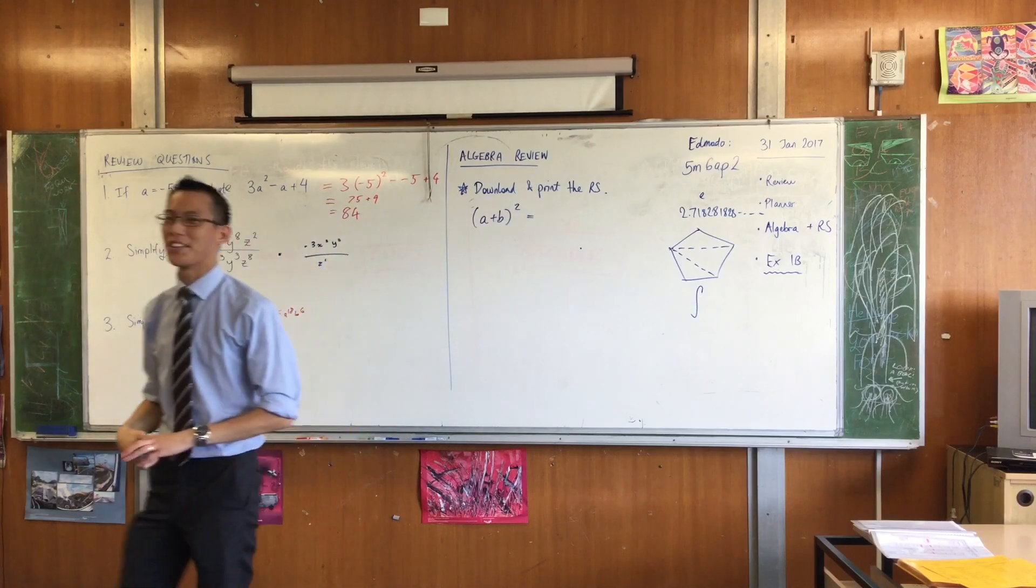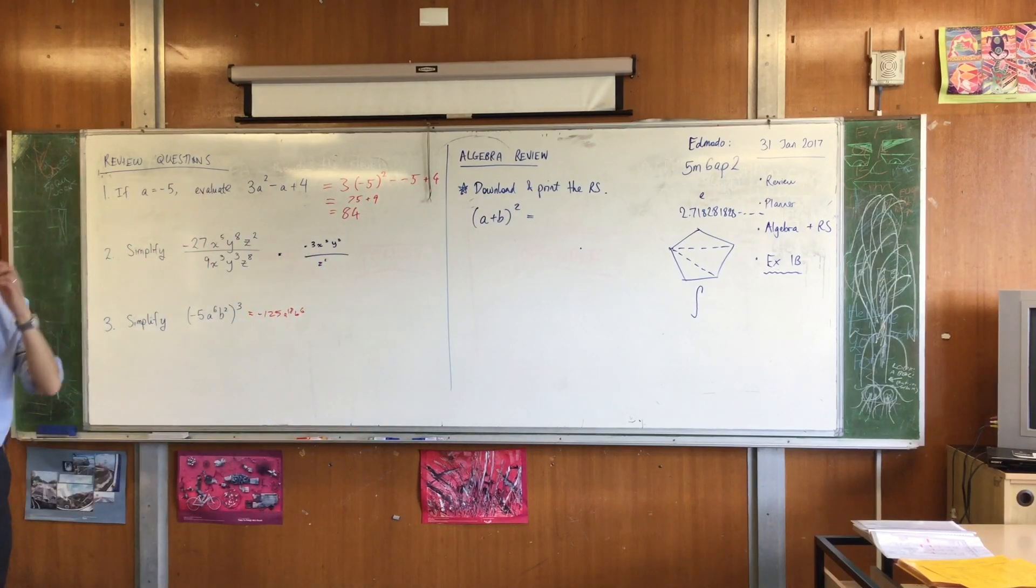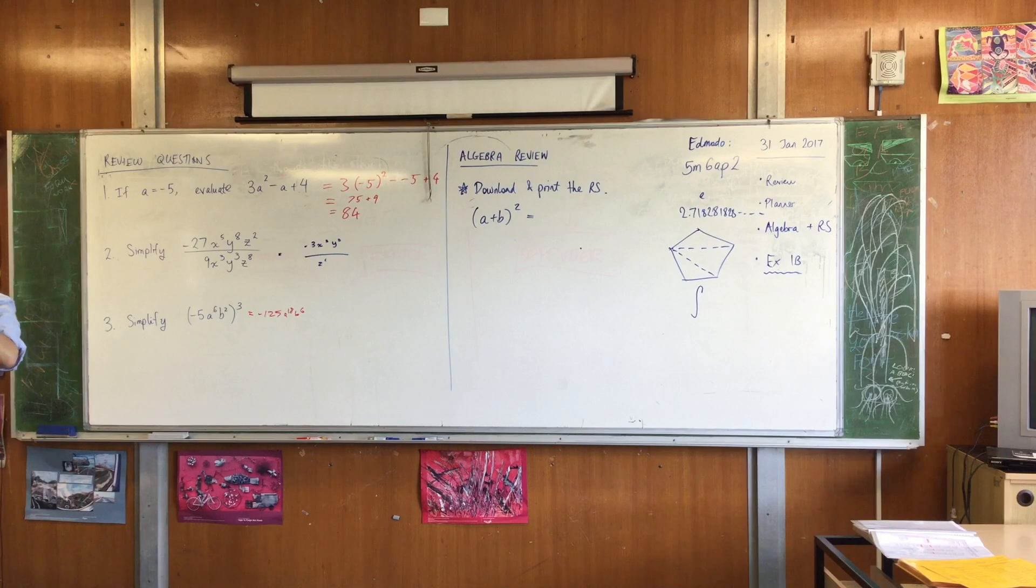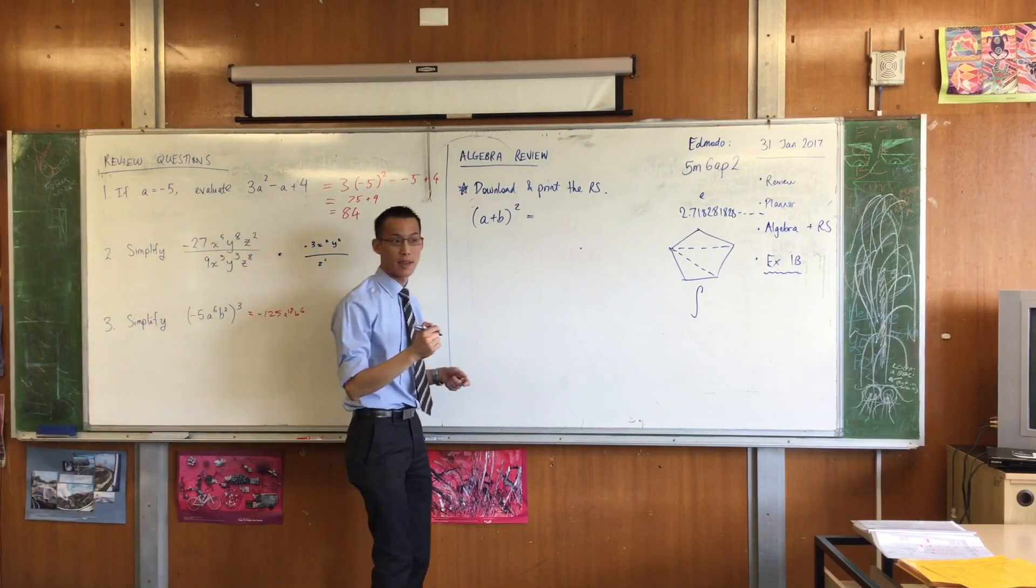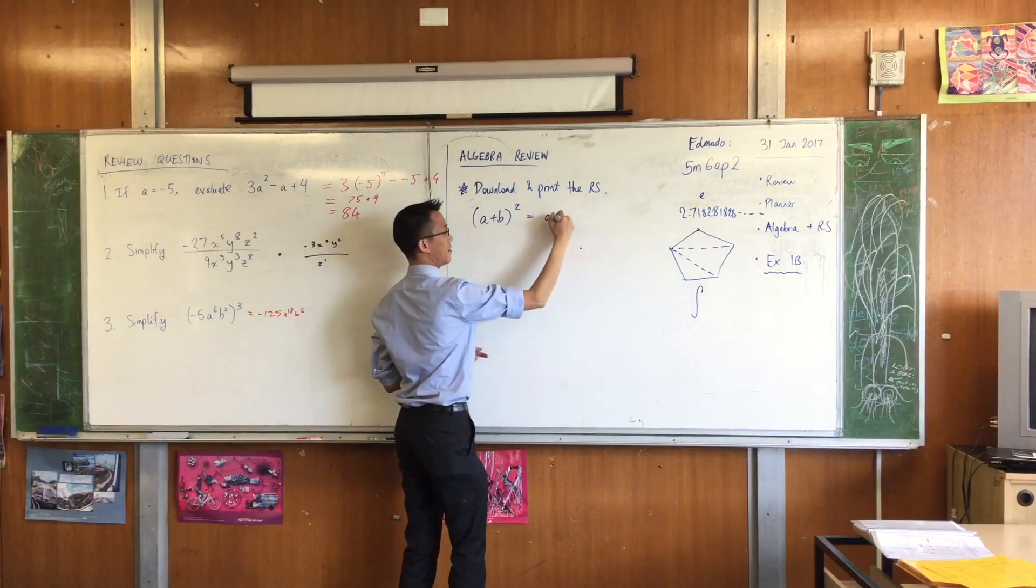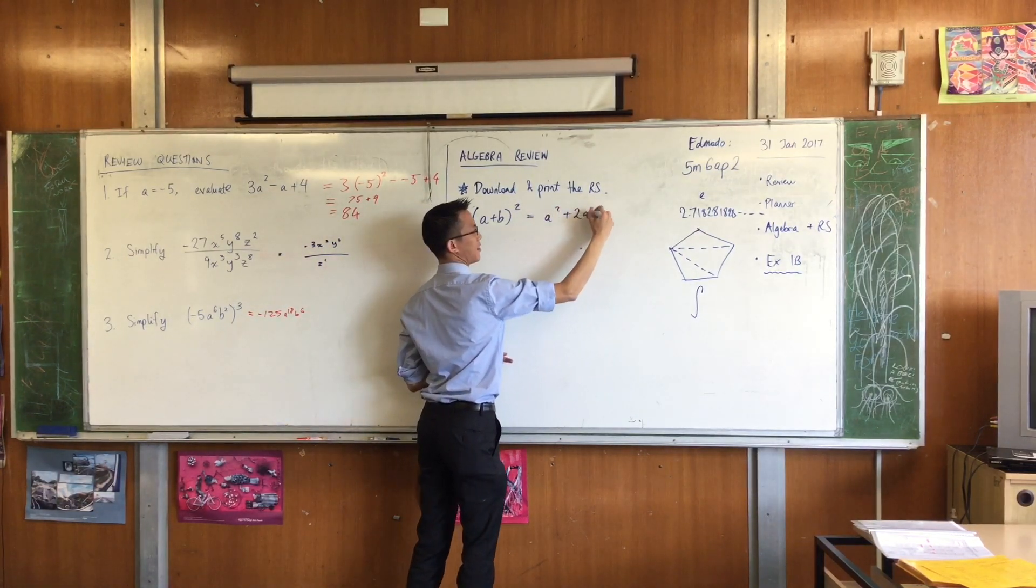Okay, we've learned this a while ago, so you can tell me that if you have a sum, a plus b, and you square the whole thing, what's our expansion?